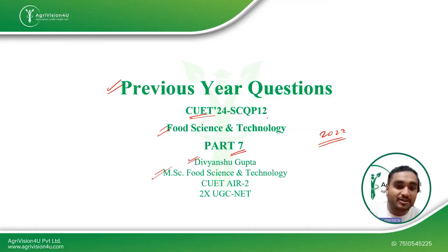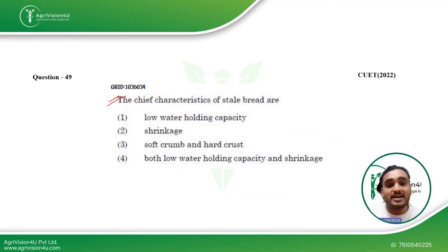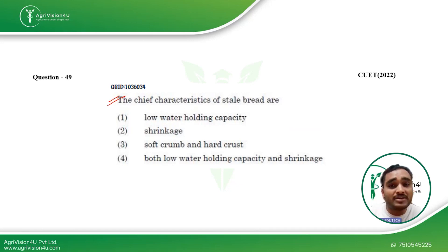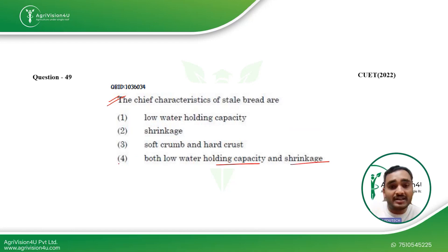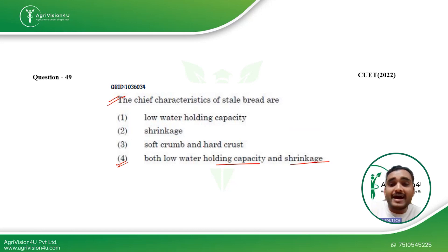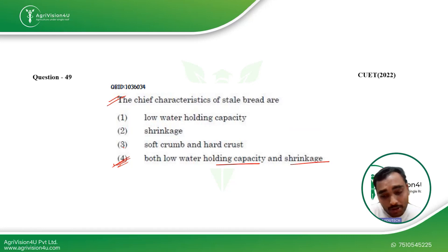Coming straight to the first question: the chief characteristics of stale bread. Staling in bread is usually attributed to retrogradation of starch — that means the soggy appearance and the aroma associated with stale bread. Both low water holding capacity and shrinkage are usually observed in stale bread. Soft crumb and hard crust are observed in fresh bread, not stale bread. So option four is the most optimum answer for this question.